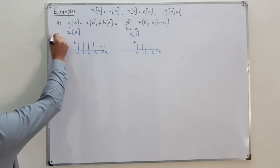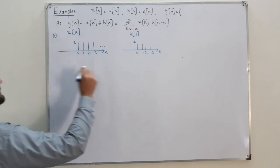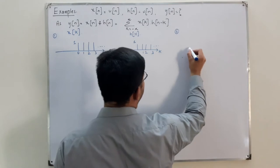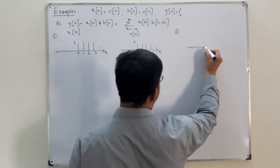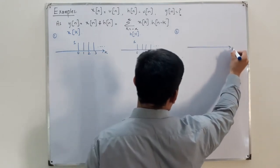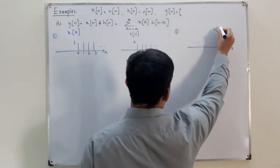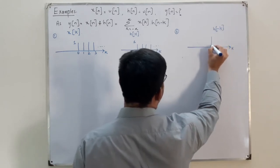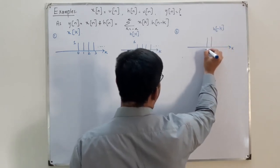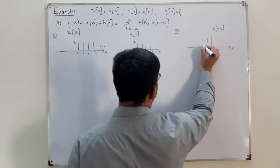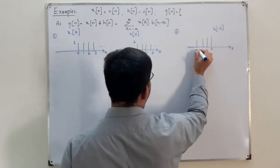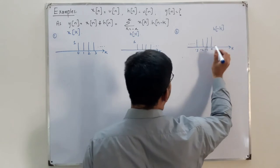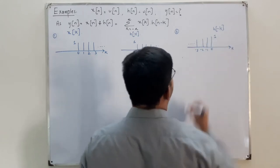Step number two is to time-reverse h(k). So now on the k-axis, h(minus k) exists at 0, minus 1, minus 2, minus 3 and out to negative infinity, with value 1.